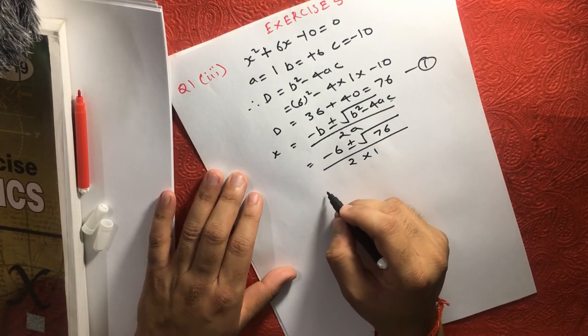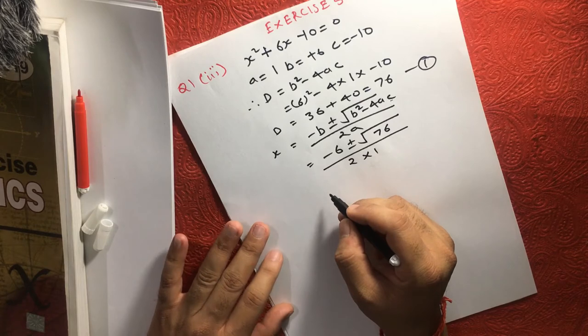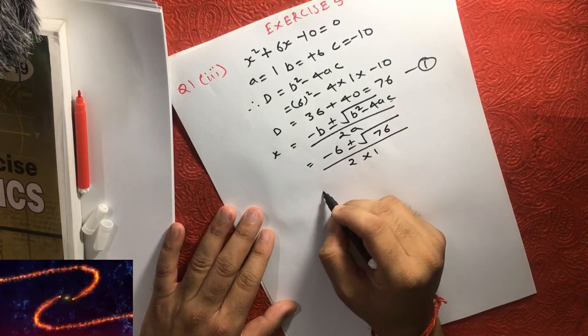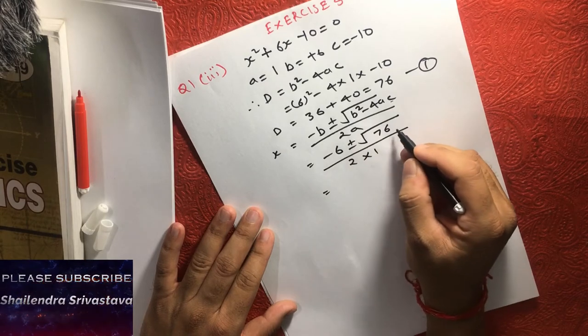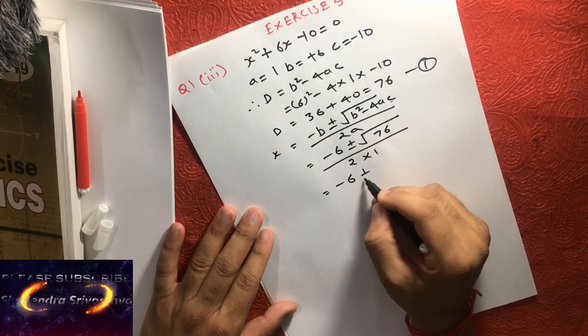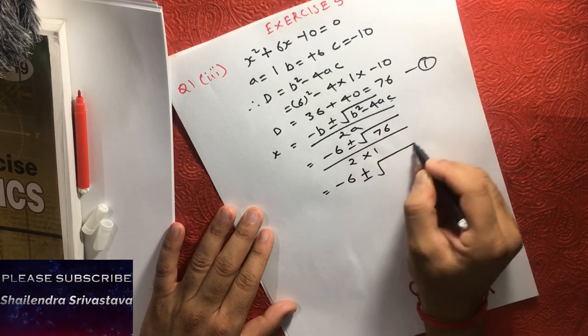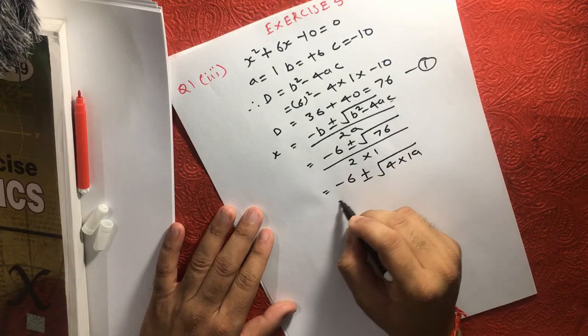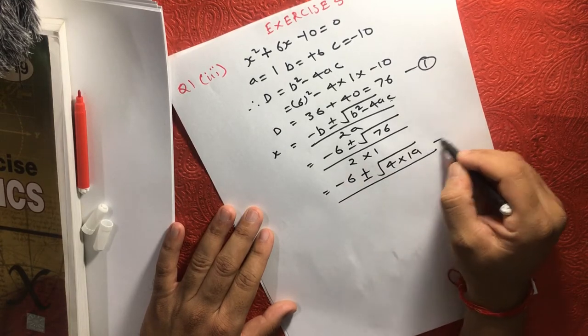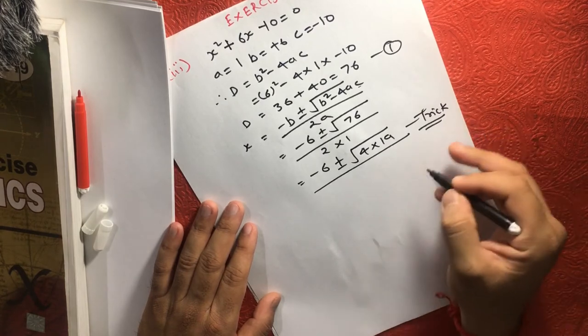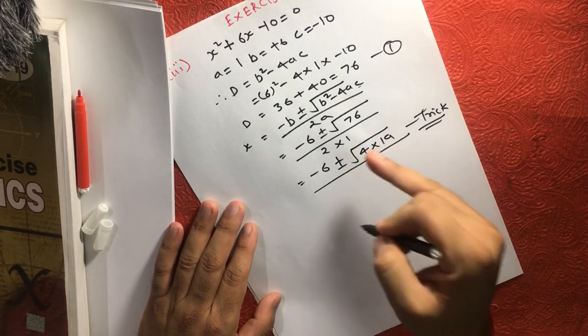Now here we need to see one thing: how to solve this kind of equation? For that, we can simply break this 76. Minus 6 plus minus 76, we can also write as 4 into 19. That's the only trick. This is the trick you need to understand in this question.